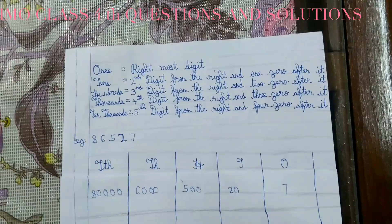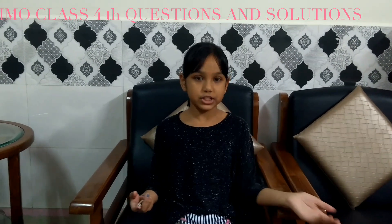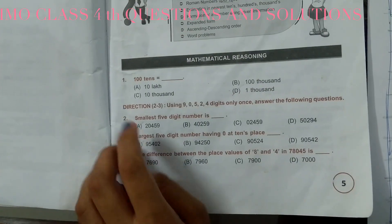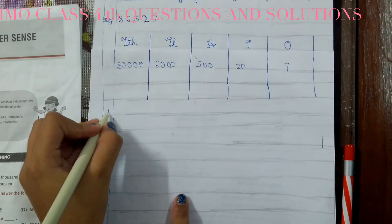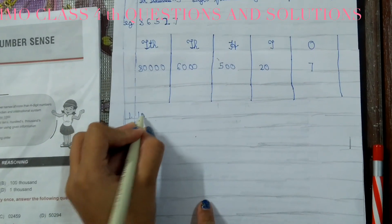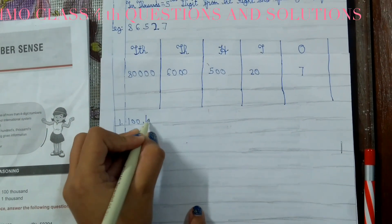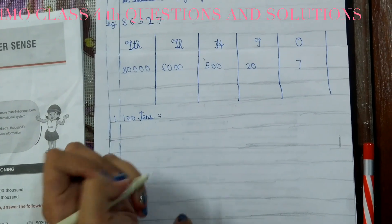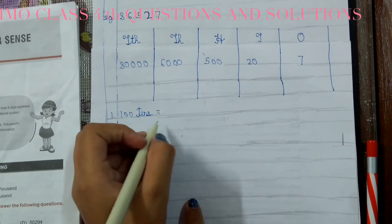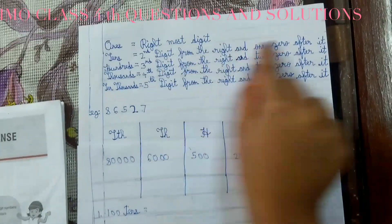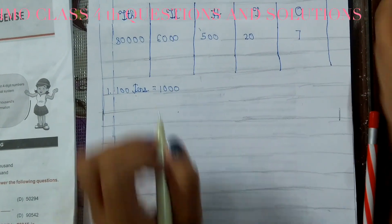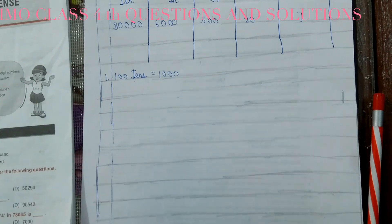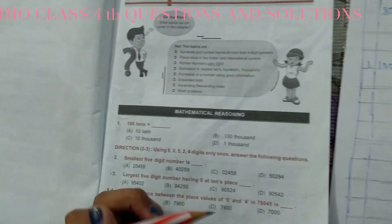Let's start solving the questions. The first question is: 100 tenths is equal to what? Here, tenths means we add one zero. So we have written 100 and one zero after, giving us 1000. The answer is 1000, which is D.